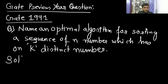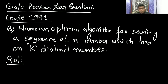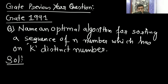Now think about this: they are asking you to give an optimal sorting algorithm for a sequence of n numbers, where the sequence contains only k distinct numbers. So your total numbers given is n, and which has k distinct numbers, meaning the numbers will be in the range of 1 to k — only k distinct numbers.